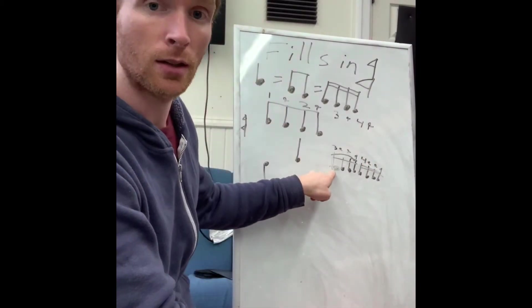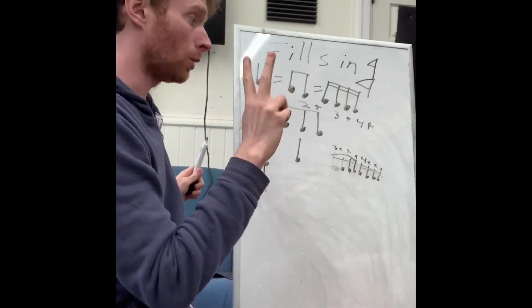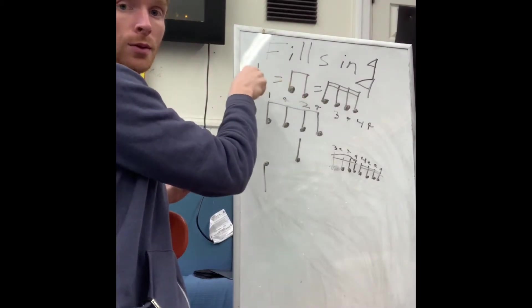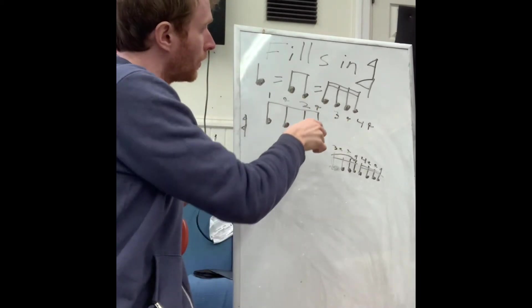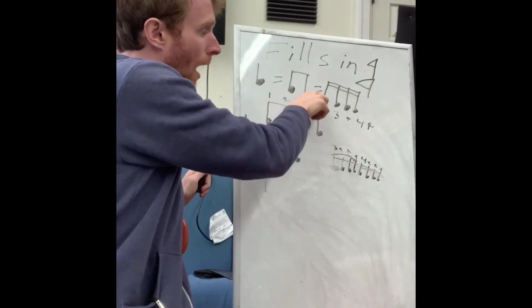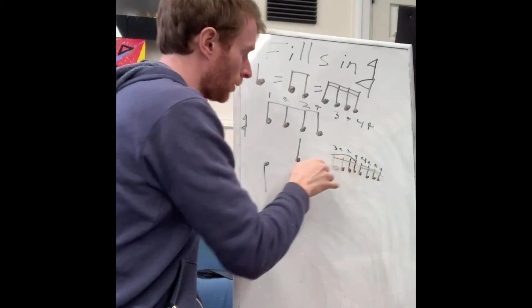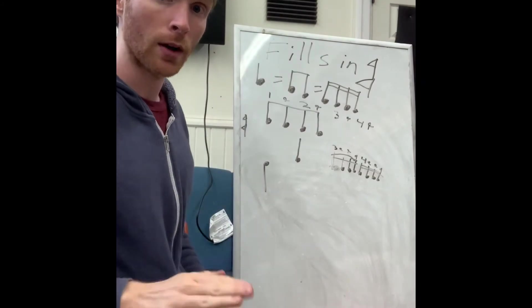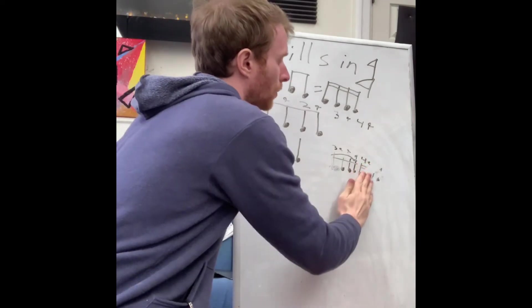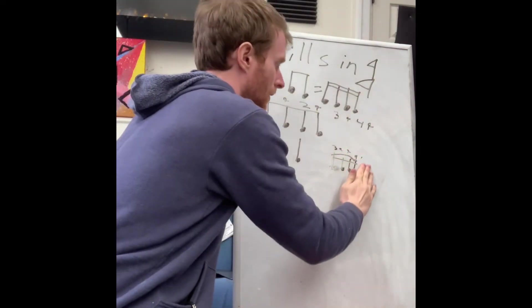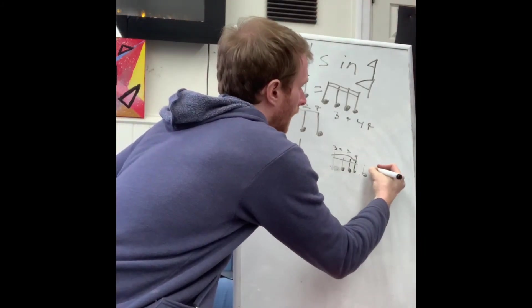Now let's say we want to keep sixteenth notes on three — three-e-and-up — but we want to put eighth notes on four. We can do that, but it would only be two eighth notes, because two eighth notes equals one quarter note. So for four, it would be four-and.